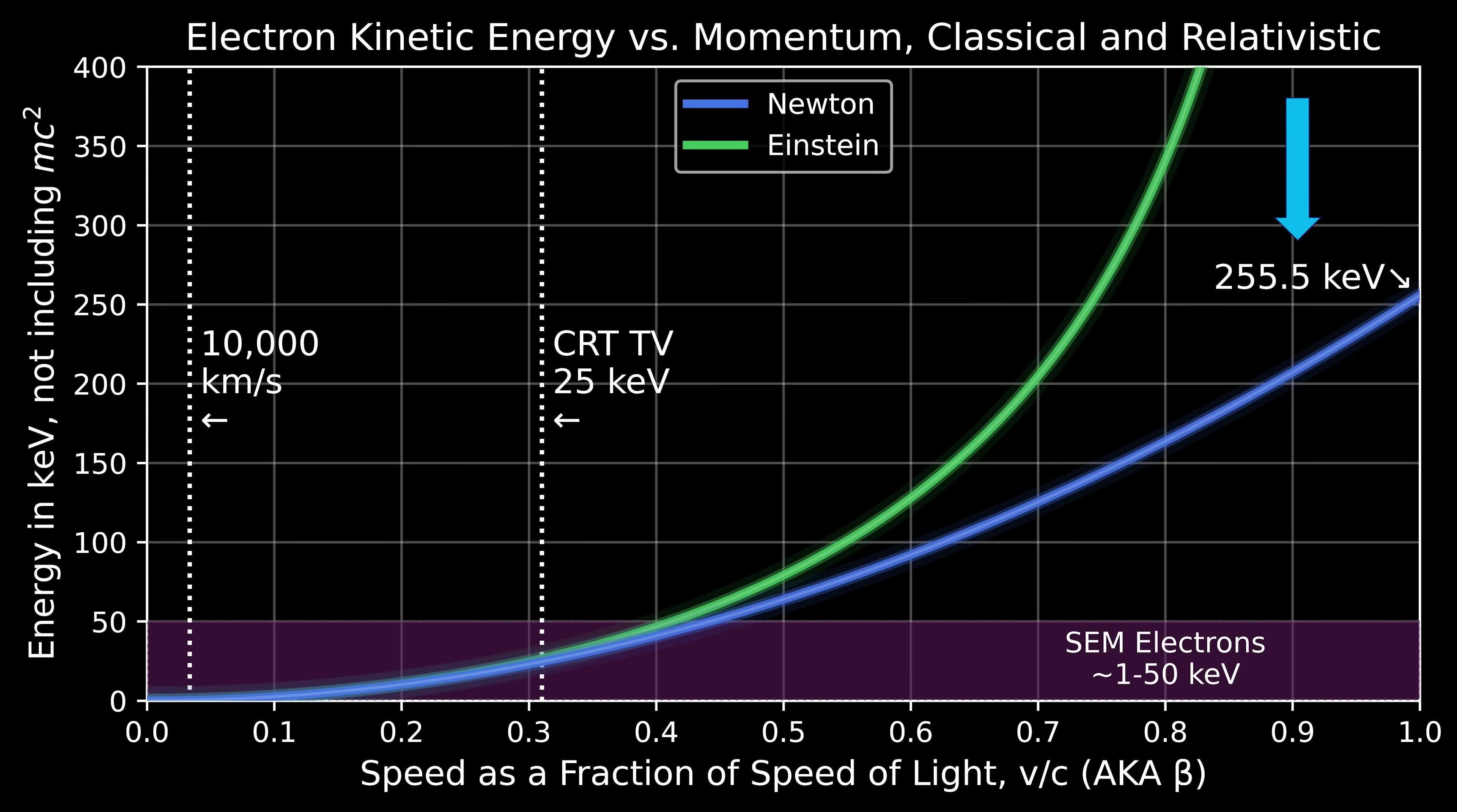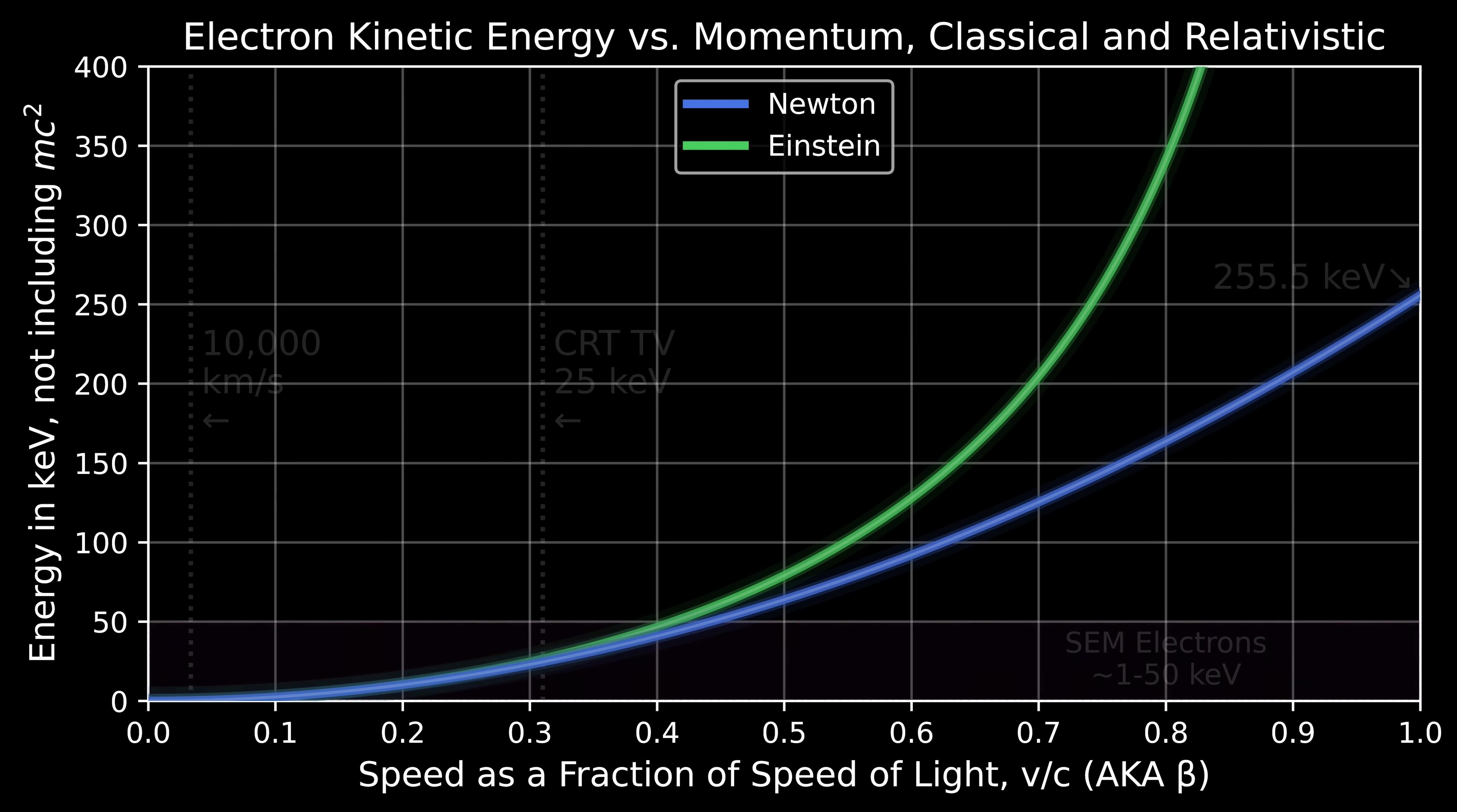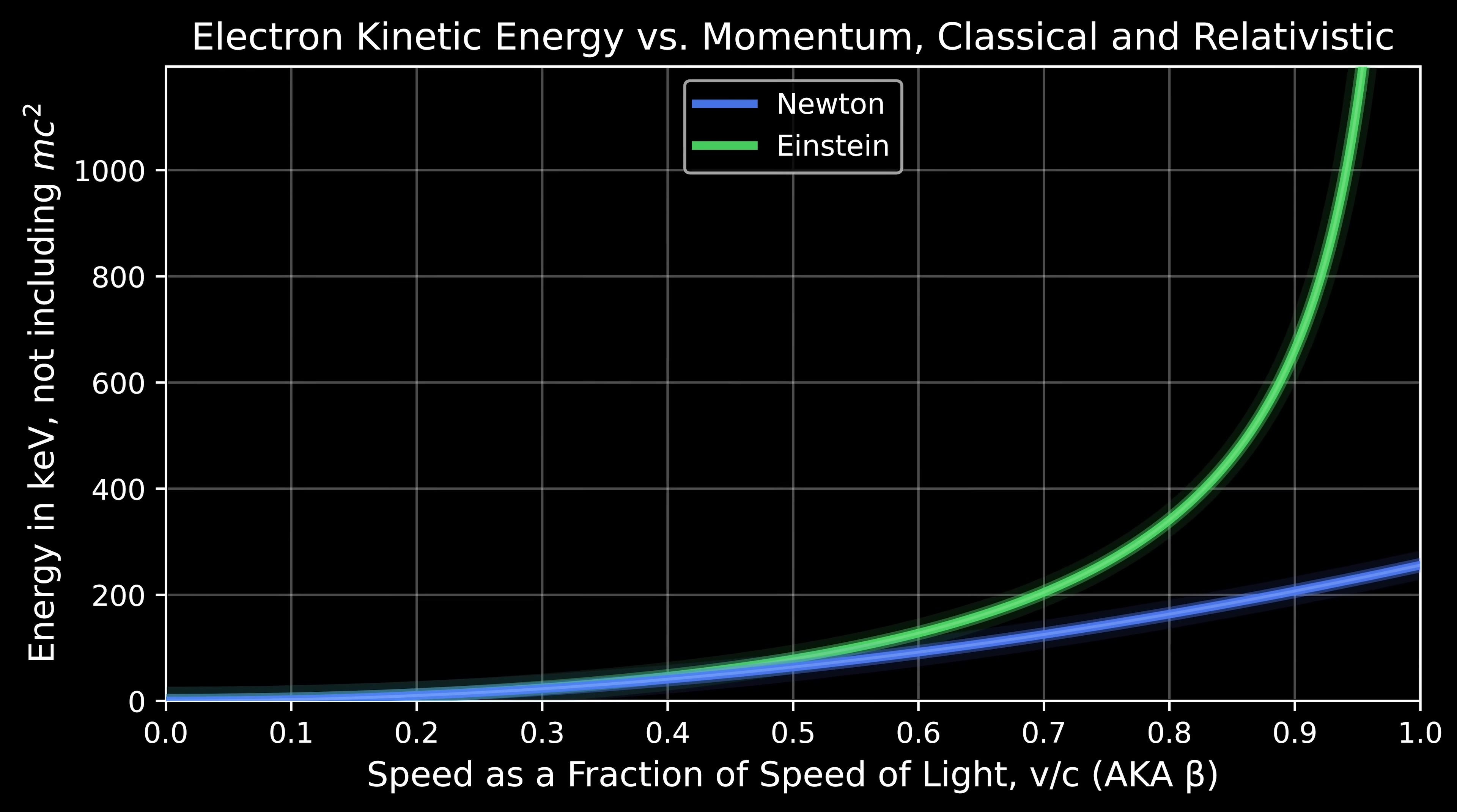But wait a minute—you can buy things off eBay to make 255 keV electrons, right? That's not at all inaccessible to modern technology. Your average hobbyist can make electrons on the order of MeVs. It's not that hard to get a high voltage and a vacuum tube and electron—you can do these things. So why is it that we haven't accelerated electrons faster than the speed of light?